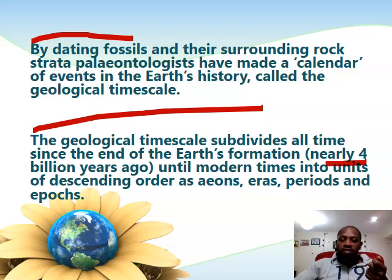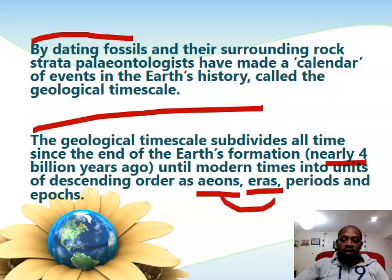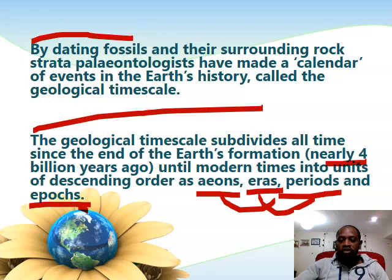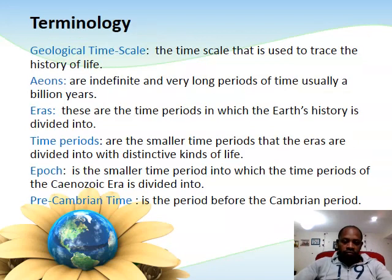The geological time scale is divided into units in descending order from the biggest to the smallest. We have the Aeons — the biggest units, spanning billions of years. Aeons are subdivided into Eras, which are shorter. Eras are subdivided into Periods, which are also shorter than Eras. And Periods are subdivided into Epochs, which are the shortest. So the hierarchy is: Aeons, Eras, Periods, and Epochs.